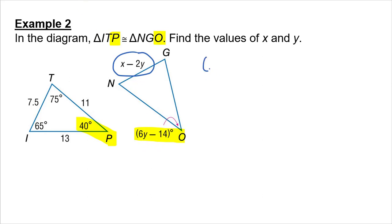That only has one variable in it, so it's easier if I solve for y. 6y minus 14 equals 40. I add 14 to both sides, divide, and I get y equals 6.